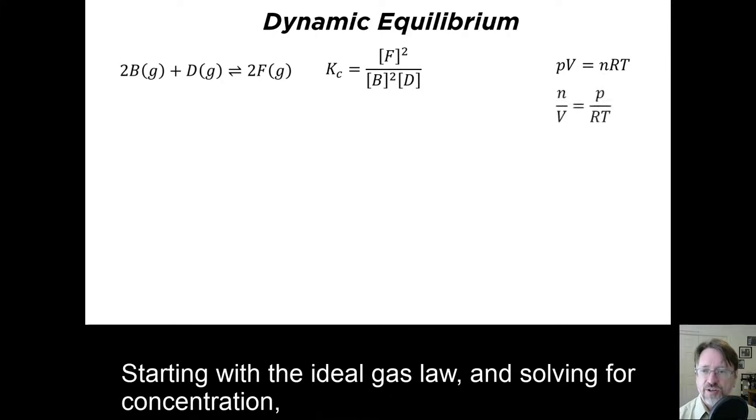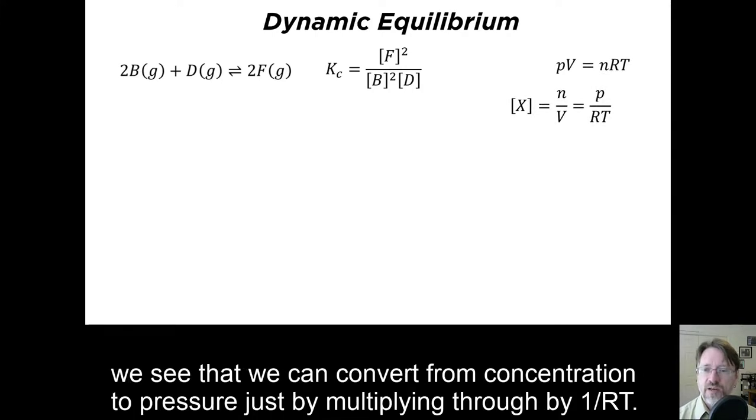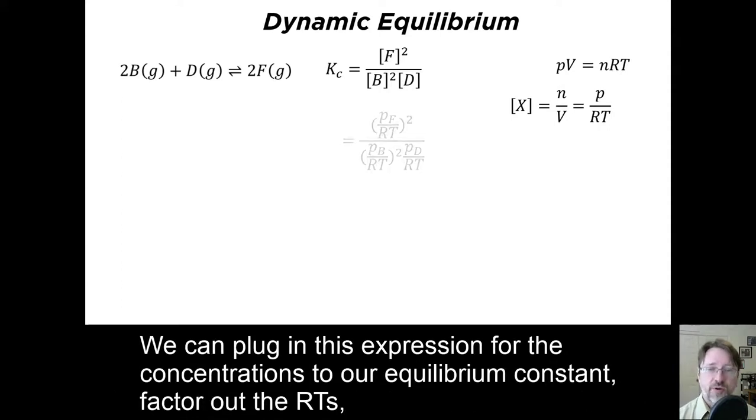Starting with the ideal gas law and solving for concentration, we see that we can convert from concentration to pressure just by multiplying through by 1 over RT. We can plug in this expression for the concentration to our equilibrium constant, factor out the RTs,